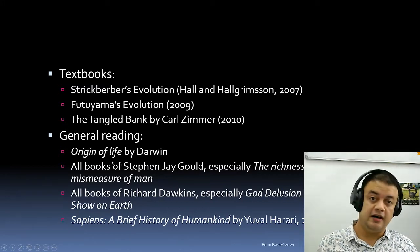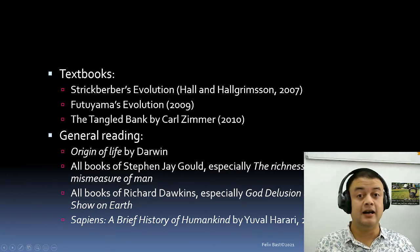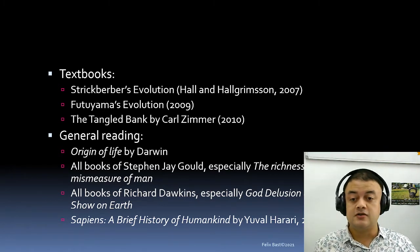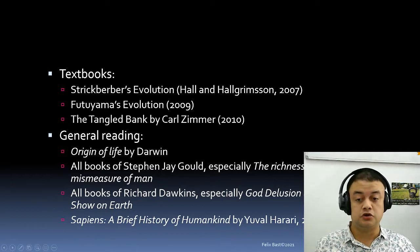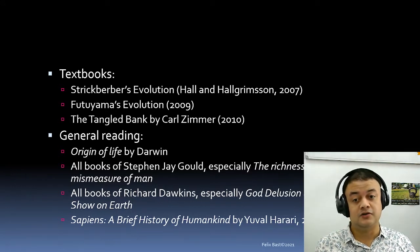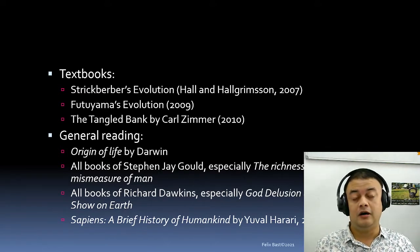Journal readings include topics on the origin of life. All books by Stephen Jay Gould — including The Richness of Life and The Mismeasure of Man — are recommended. I have my own personal copies; if you are on campus, you can approach me and I can lend you the books. Similarly, all books by Richard Dawkins, including The God Delusion and The Greatest Show on Earth, are very inexpensive and available through Amazon. I strongly suggest having a few as personal copies. Also, Yuval Harari's Sapiens is a very nice read — it gives you a new perspective and paradigm on how to see human beings, especially the culture and history of our own species.